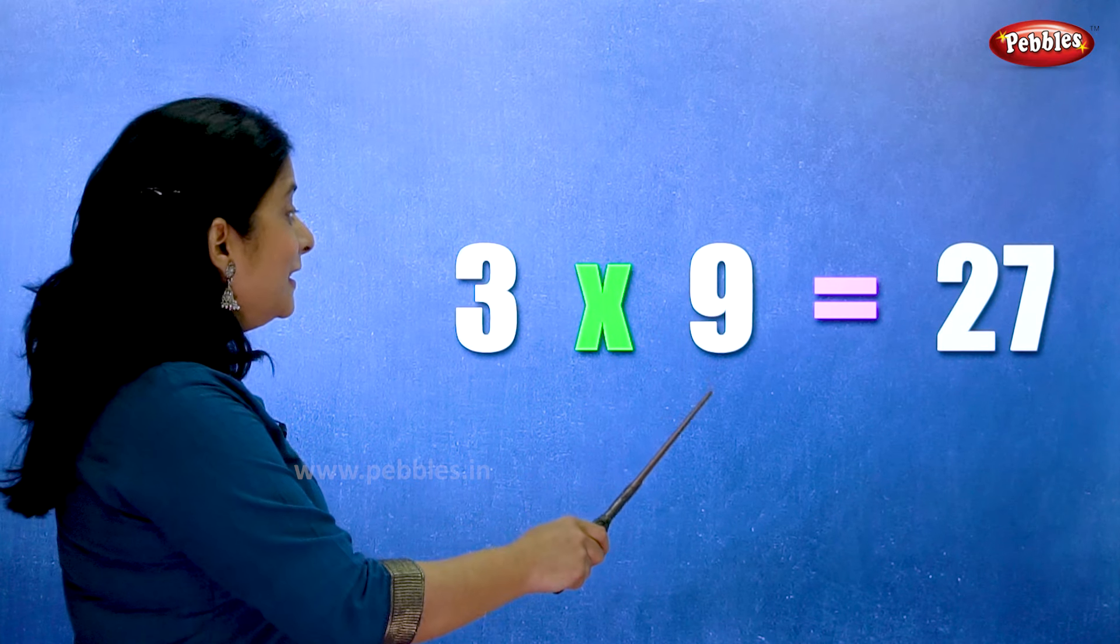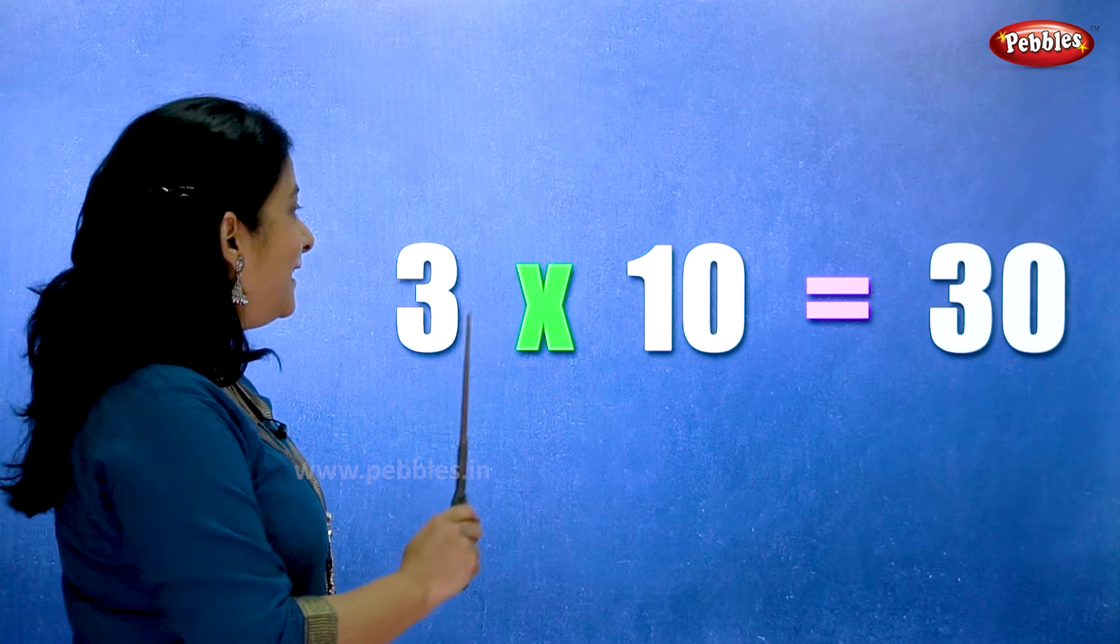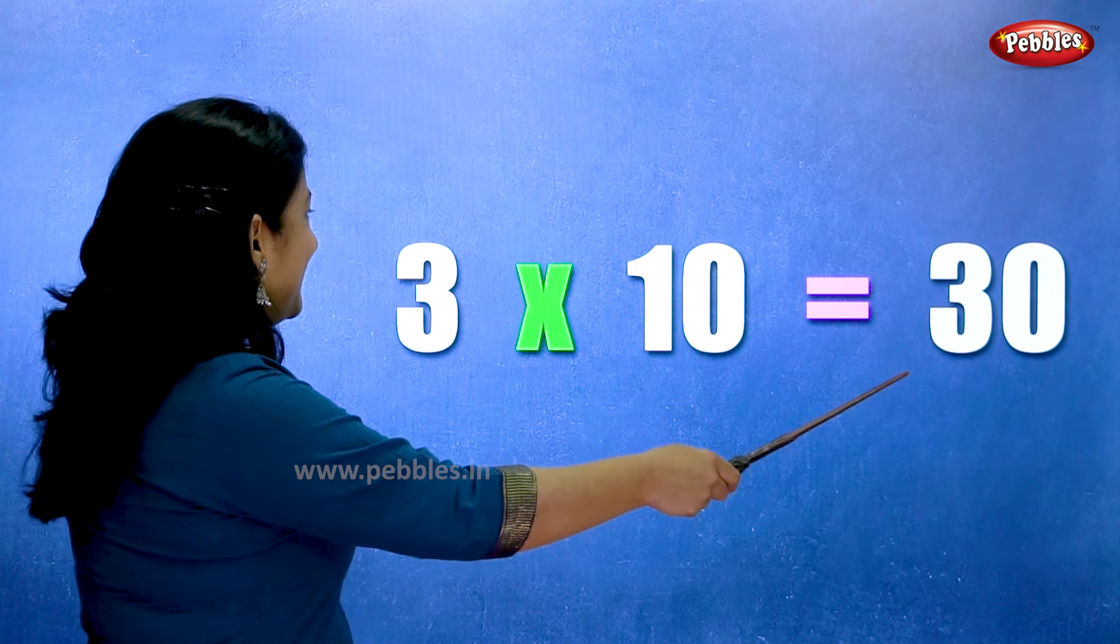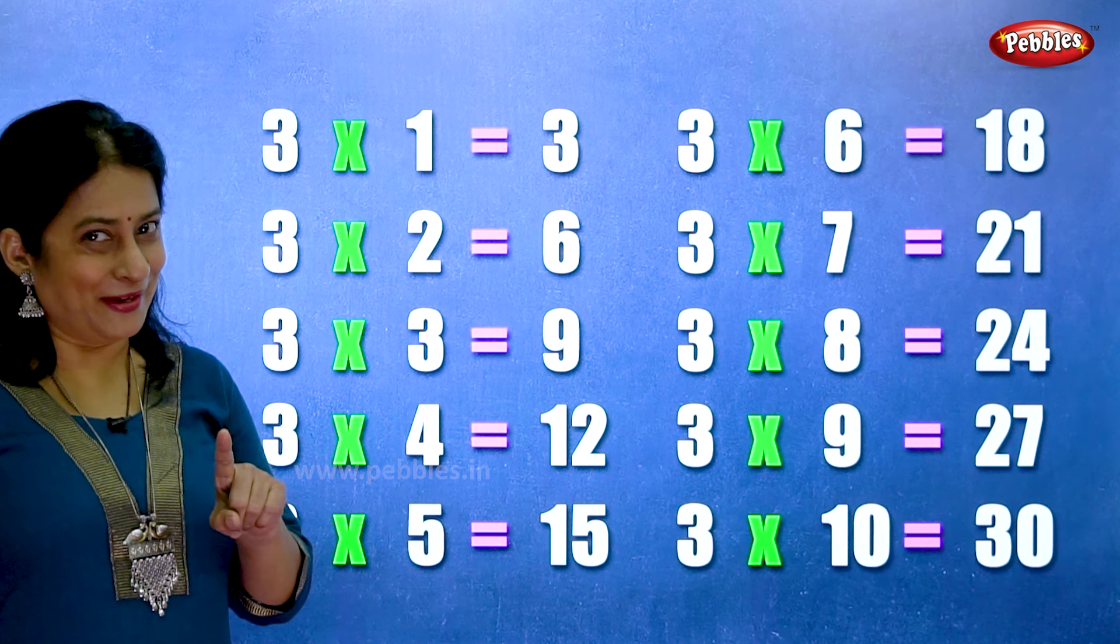Three nines are twenty-seven. Three tens are thirty. Let's learn the table of three one more time.